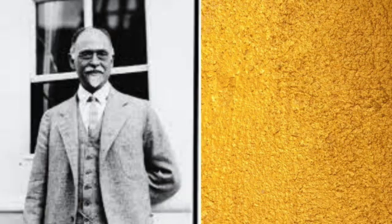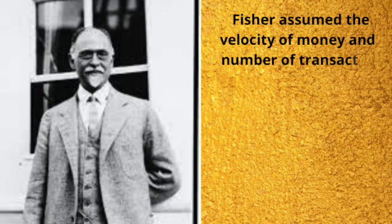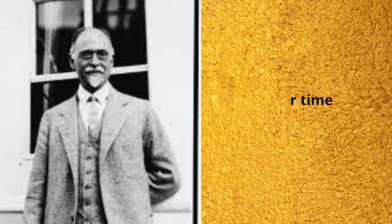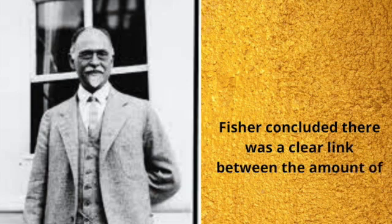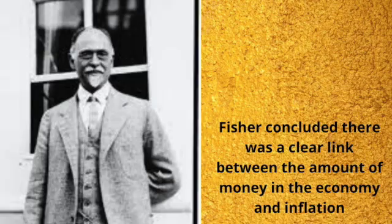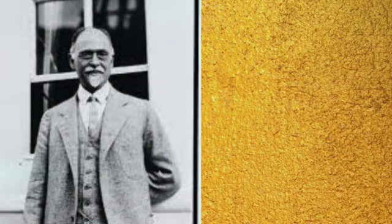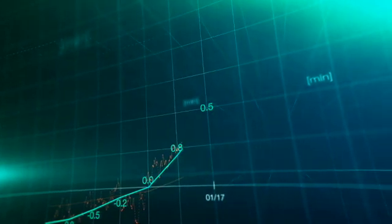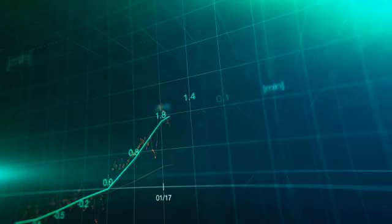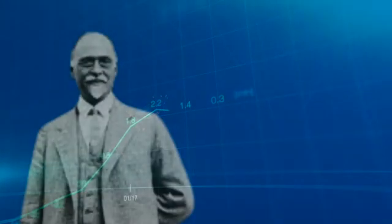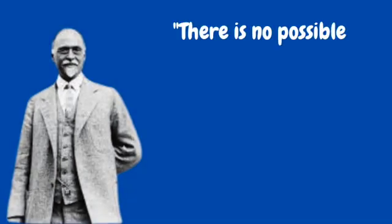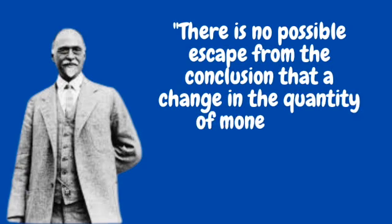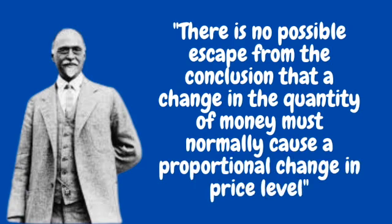Irving Fisher worked on the assumption that the velocity of money and the number of transactions were relatively stable over time. With V and T approximately constant, he concluded there was a clear link between the money supply and the price level. He justified this with an empirical study of the two-thirds rise in prices in the US between 1896 and 1909, concluding most of it was explained by a large increase in the quantity of money. His conclusion: a change in the quantity of money must normally cause a proportional change in the price level.